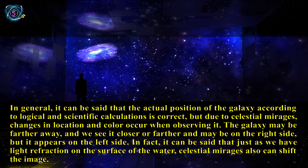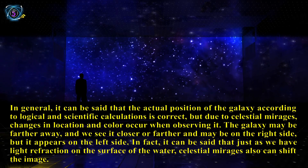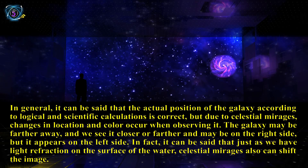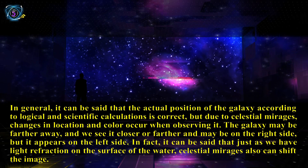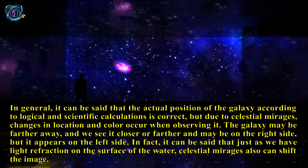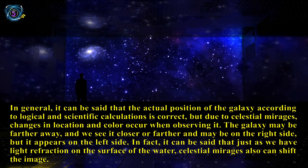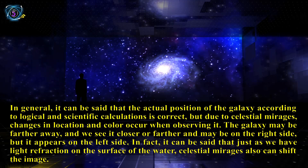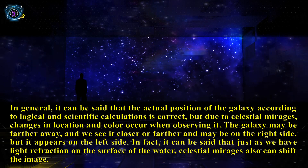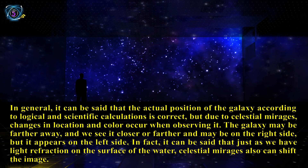In general, it can be said that the actual position of the galaxy, according to logical and scientific calculations, is correct, but due to celestial mirages, changes in location and color occur when observing it. The galaxy may be farther away and we see it closer, or it may be on the right side but appears on the left side. Just as we have light refraction on the surface of water, celestial mirages can also shift the image.